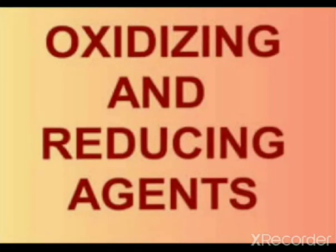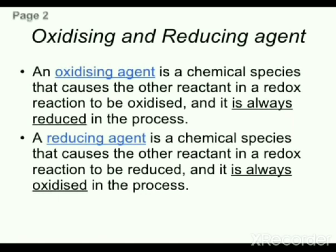In a redox reaction equation, you know how to identify the substance oxidized and reduced, either in terms of oxygen or hydrogen. Along with that, you should also know how to identify the oxidizing agent and reducing agent. An oxidizing agent is a species which helps in the oxidation of another substance, and a reducing agent is a species which helps in the reduction of another substance.